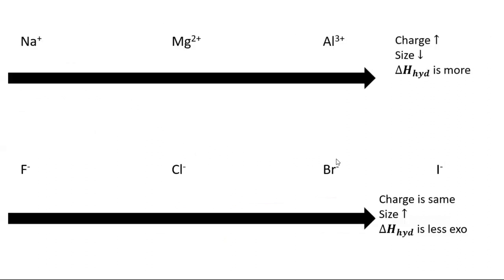Remember that with Na+ and Mg2+, as charge is increased and size is reduced, delta H hydration becomes more negative. For F-, Cl-, Br-, I-, the charge is the same but size increases, so delta H hydration is less exothermic.